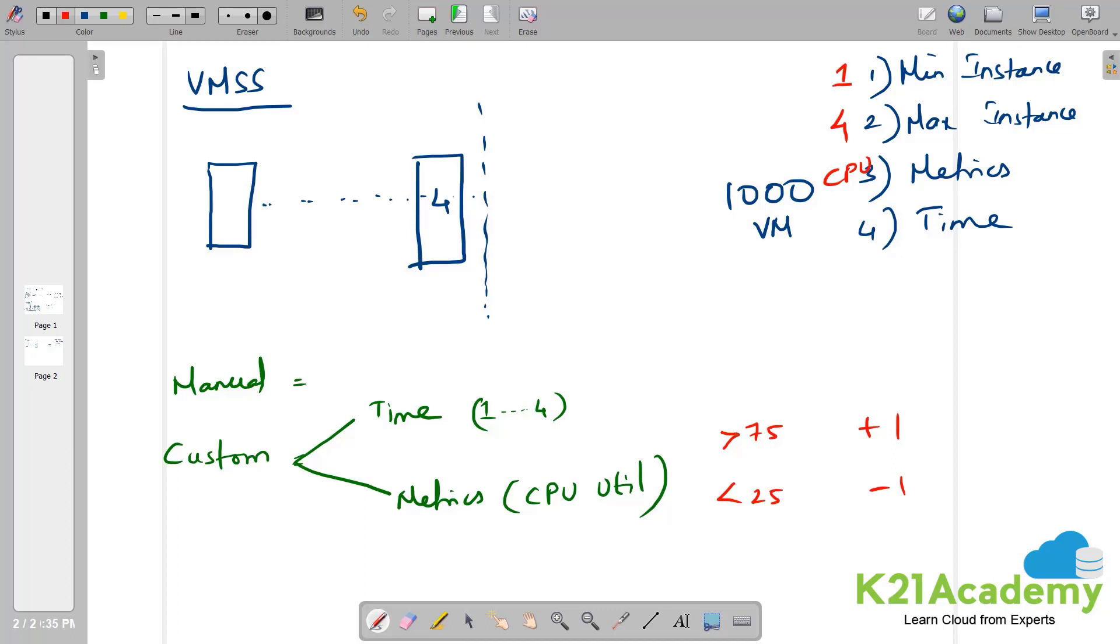If the CPU utilization is greater than 75%, plus one machine. If it is less than 25%, minus one machine. If I give this particular metric to my first virtual machine, wherein maximum of 75 and minimum of 25. If it is 75, plus one. If it is 25, minus one.